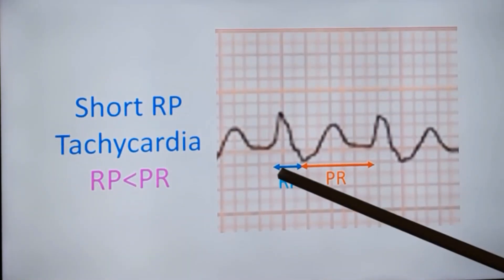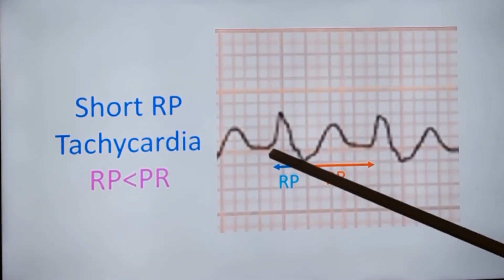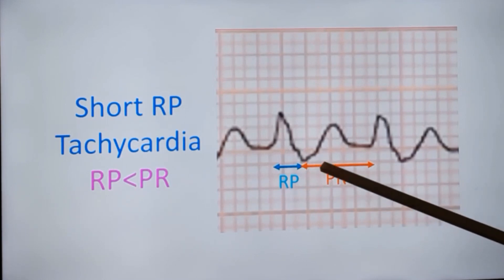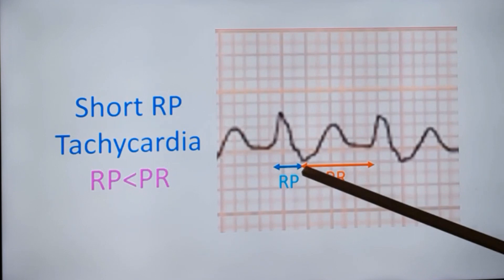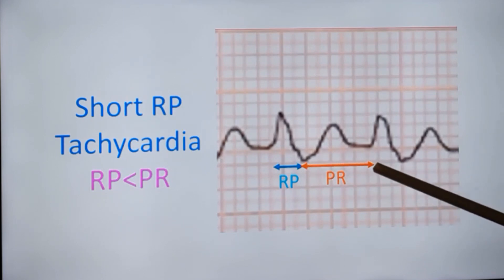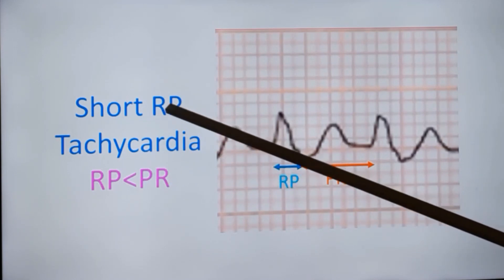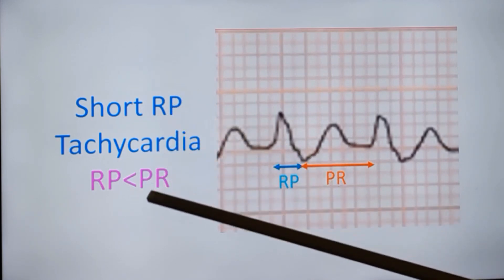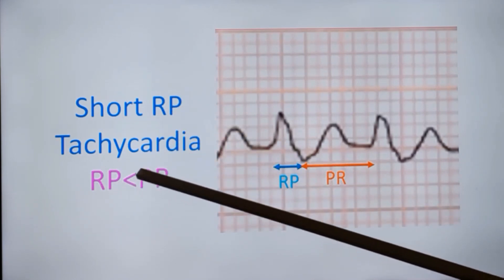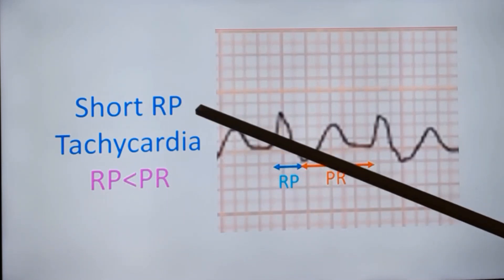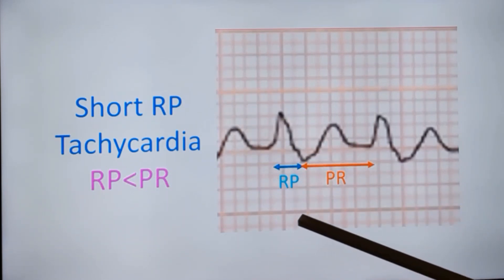You can measure the RP interval from the onset of the R wave to the onset of the retrograde P-wave, and the PR interval from the onset of the retrograde P-wave to the subsequent R wave. In this ECG you can see that RP is short and RP is less than the PR interval. This is known as a short RP tachycardia.